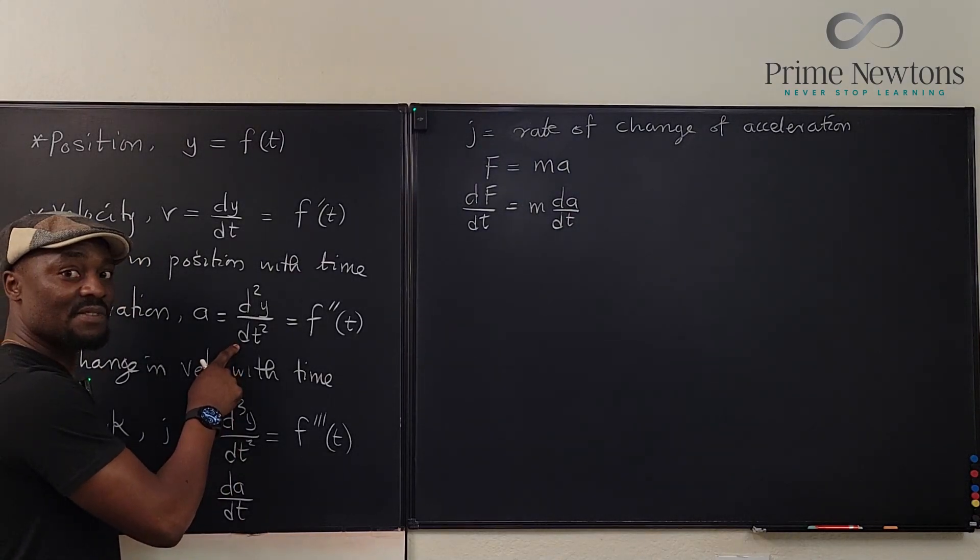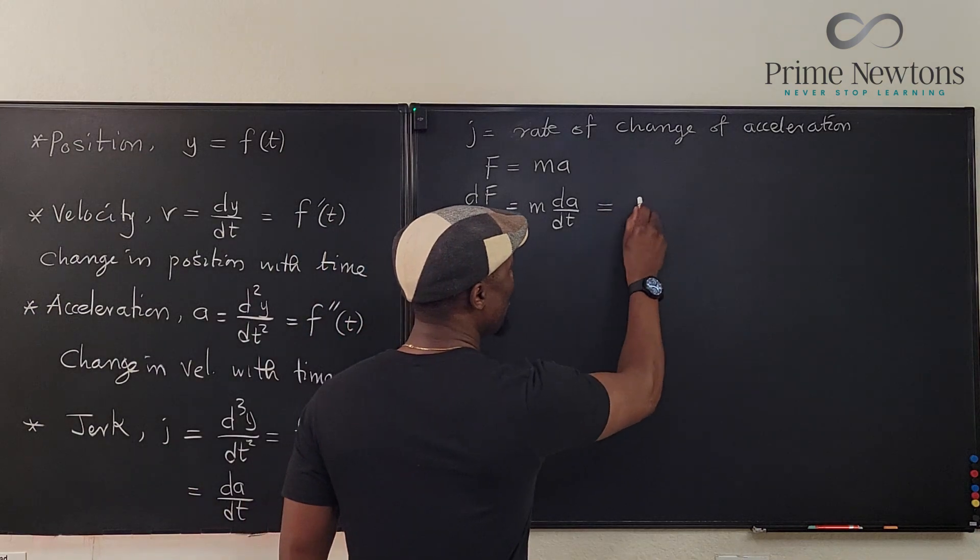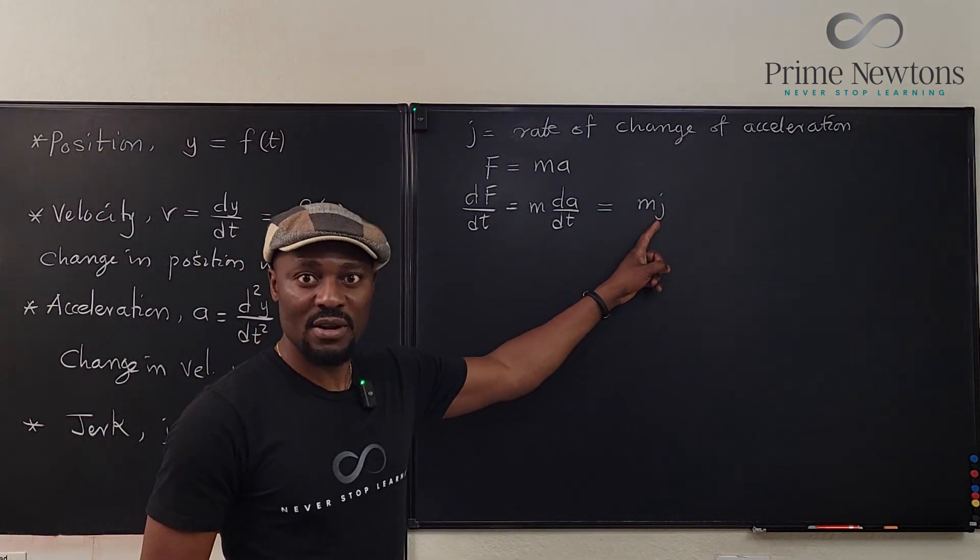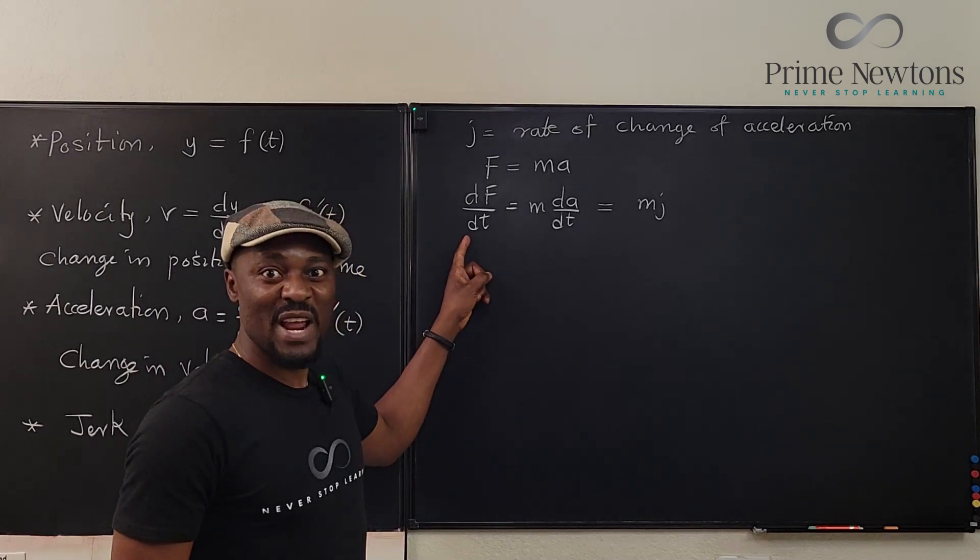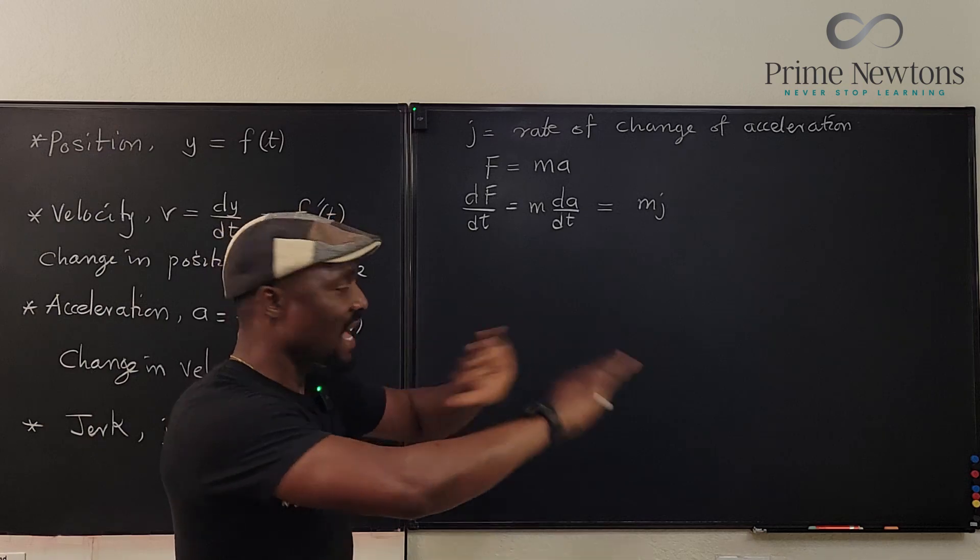This is equal to dA/dt. Acceleration is dV/dt. So, here, it is dA/dt, and this is equal to m j. It is the mass times the jerk of the function. That is the rate of change of force with time.